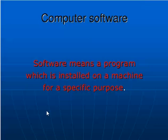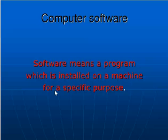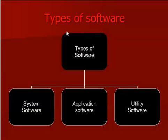Software means a program which is installed on a machine for a specific purpose. Types of software include: